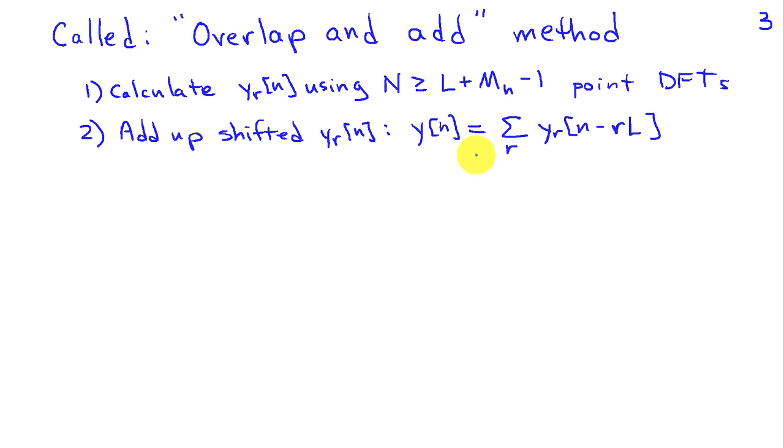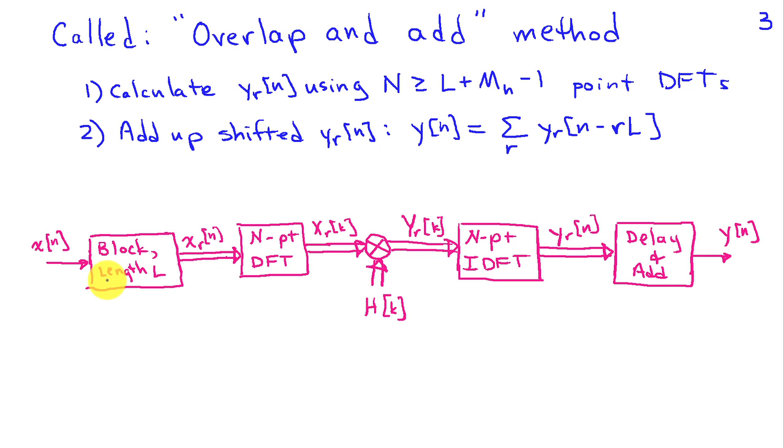Then we're just going to add up these shifted y_r's. A block diagram looks like this: We take x[n], pull out a block of length L called x_r[n], take the N-point DFT where N ≥ L + m_h - 1 to get X_r[k]. We multiply that by the N-point DFT of the filter impulse response H[k] to get Y_r[k]. Then we take the inverse DFT to obtain y_r, and then we add these up with the appropriate time delays so that they line up the way they're supposed to. This is the overlap-and-add method of computing convolution. This can actually be faster than directly computing convolution because of the availability of fast algorithms for computing the two DFTs.